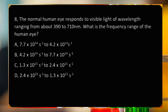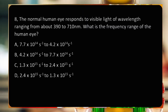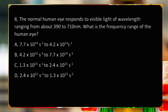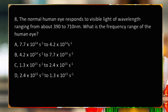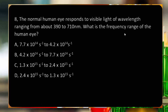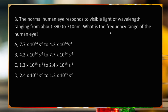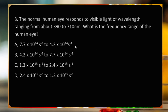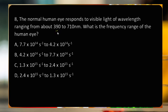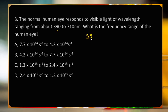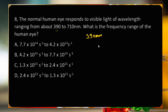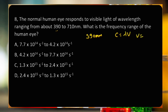The normal human eye responds to visible light with wavelengths ranging from about 390 to 710 nanometers. What is the frequency range of the human eye? We use the relationship V equals C divided by lambda.